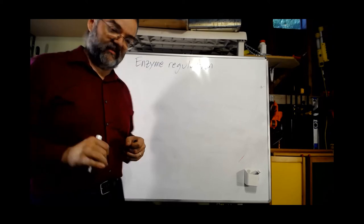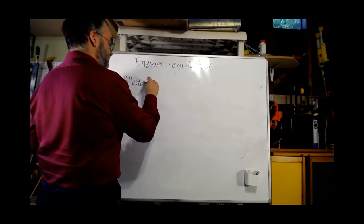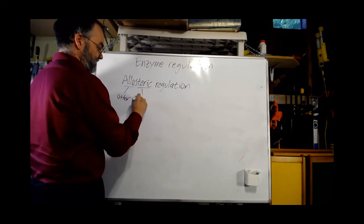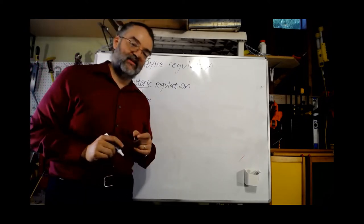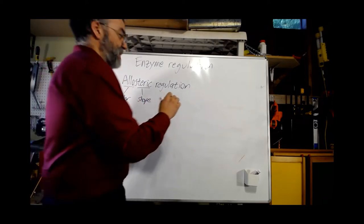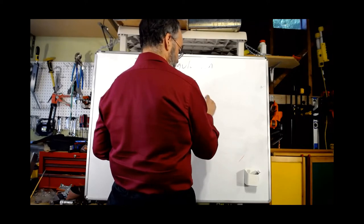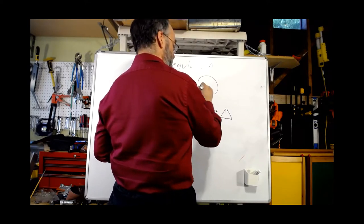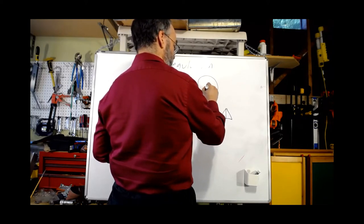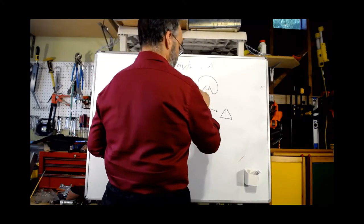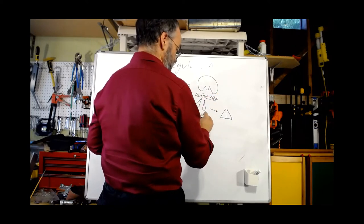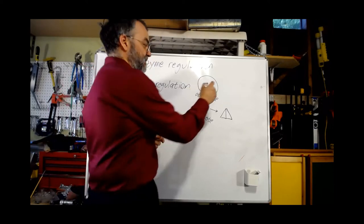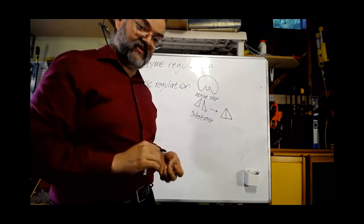There are two overall ways we'll talk about enzyme regulation. The first is allosteric regulation. 'Allo' means other, 'steric' means shape — so allosteric regulation means changing the function of an enzyme by changing its shape. Imagine we want to catalyze two half-triangles joining into a full triangle. The enzyme has an active site where the substrate — the two half-triangles — binds, and when they bind the enzyme brings them together to make a full triangle.